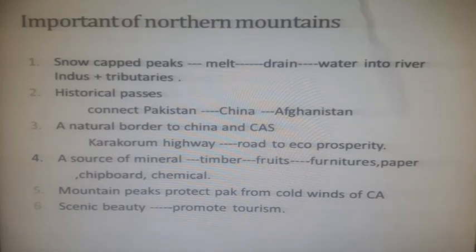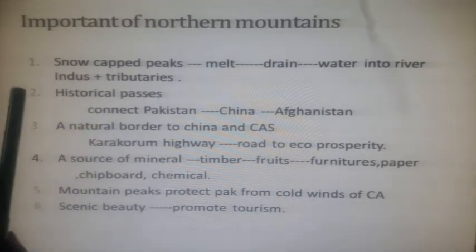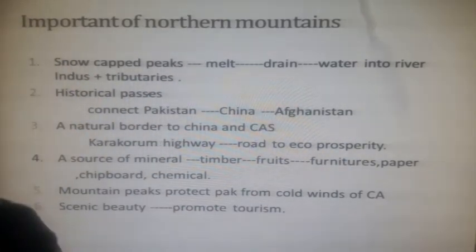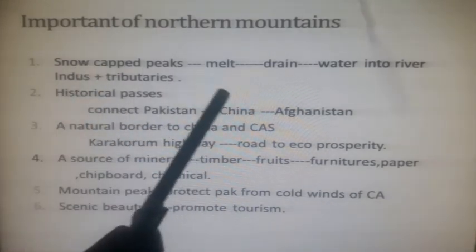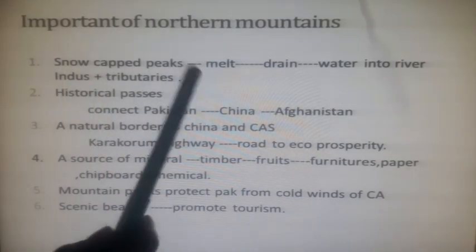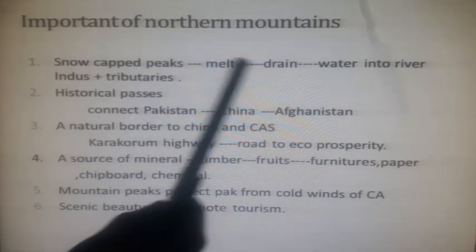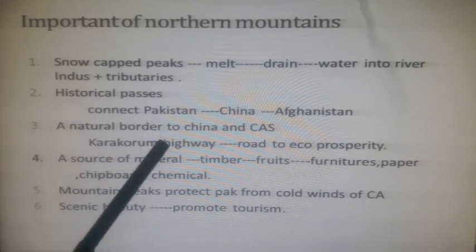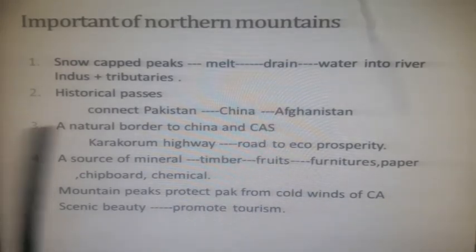The northern mountains are important for several reasons. Snow-capped mountains melt to drain into the River Indus and its tributaries, helping irrigate the Indus Plain. Historical passes connect Pakistan with China via the Khunjerab Pass and with Afghanistan via the Khyber Pass. These mountains also serve as a natural border and shield against China and the Central Asian Republics, and the Karakoram Highway — a road to economic prosperity — lies in these mountains.